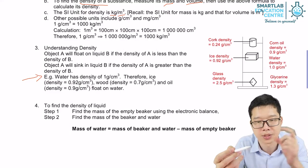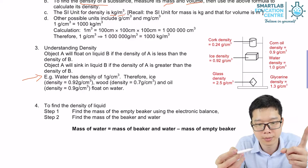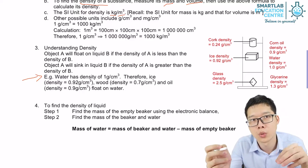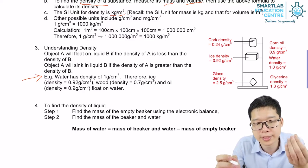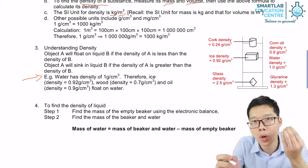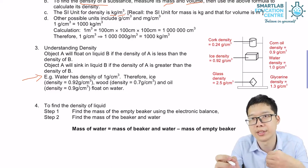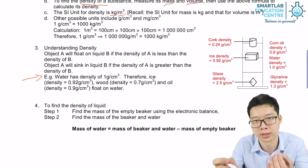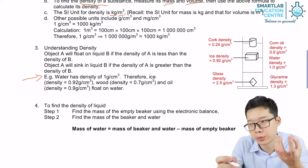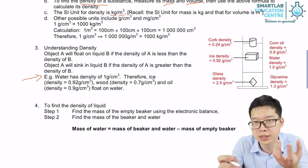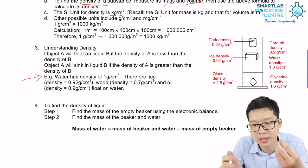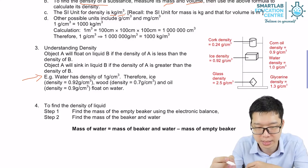Density of water is 1 gram per cm³. So anything which has a smaller density than 1, smaller density than water, it can float on water. Any metal which has a larger density than 1, larger density than water, it will sink.